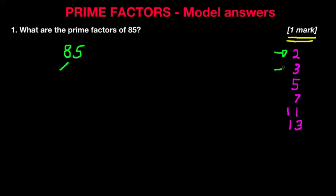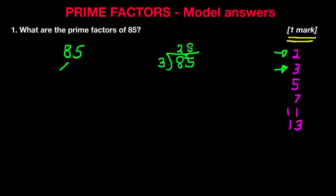So we move on to the next highest prime number, which is 3. Can 85 be divided by 3? Let's write it down. 85 divided by 3: 3s into 8 is 2, remainder 2. 3s into 25 is 8, but we have remainder 1. Therefore it cannot be divided by 3.